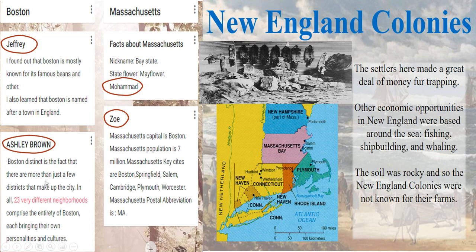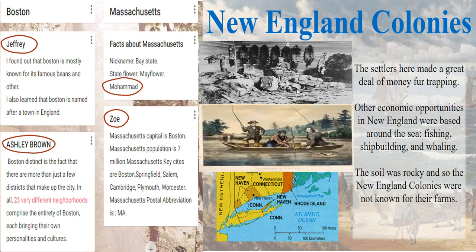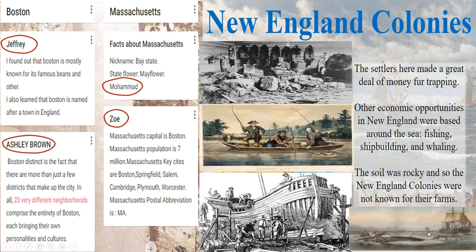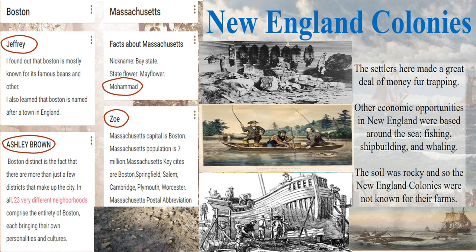Jeffrey and Ashley were responsible for finding out about Boston, which was a city in the colony, not a colony itself. Mohammed and Zoe were responsible for Massachusetts. The sailors here made a great deal of money fur trapping. Other economic opportunities in New England were based around the sea: fishing, shipbuilding, and whaling. The soil was rocky, and so the New England colonies were not known for their farms — it is very hard to farm with that kind of soil.